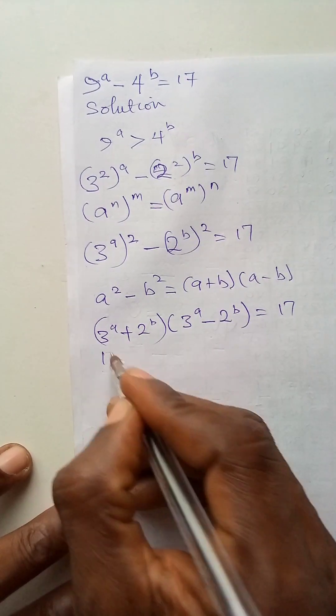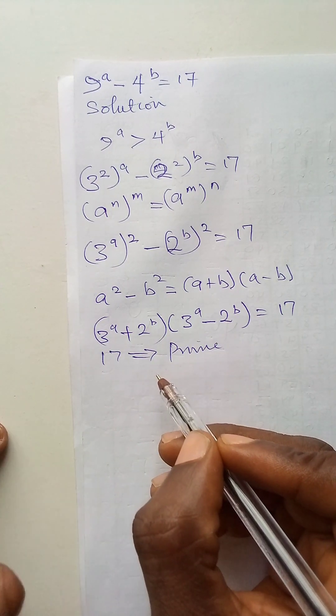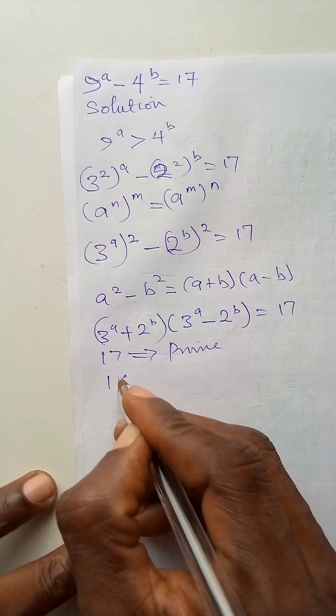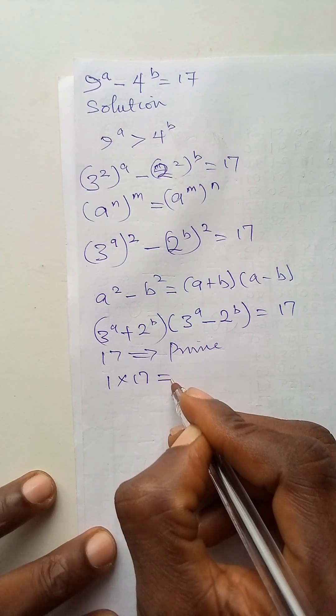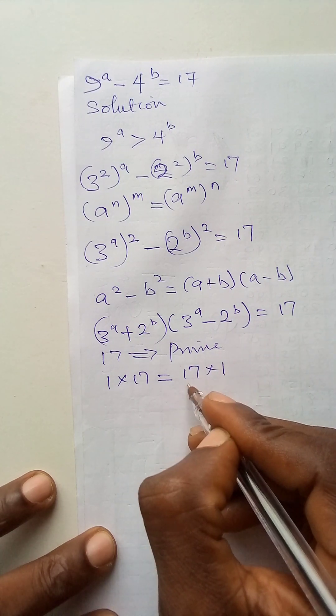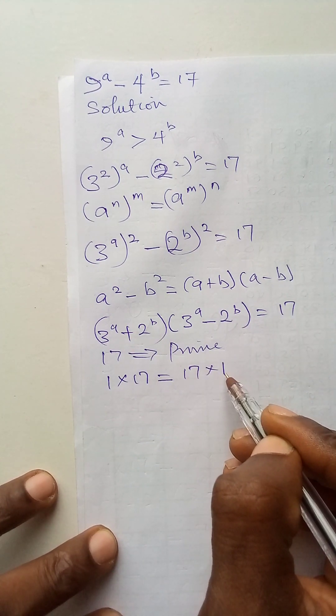Now, 17 is a prime number, and being a prime number, it has just two factors: 1 and itself. And 1 times 17 is also the same thing as 17 times 1. I will express 17 as 17 times 1, so I can equate each bracket to 17 and to 1.